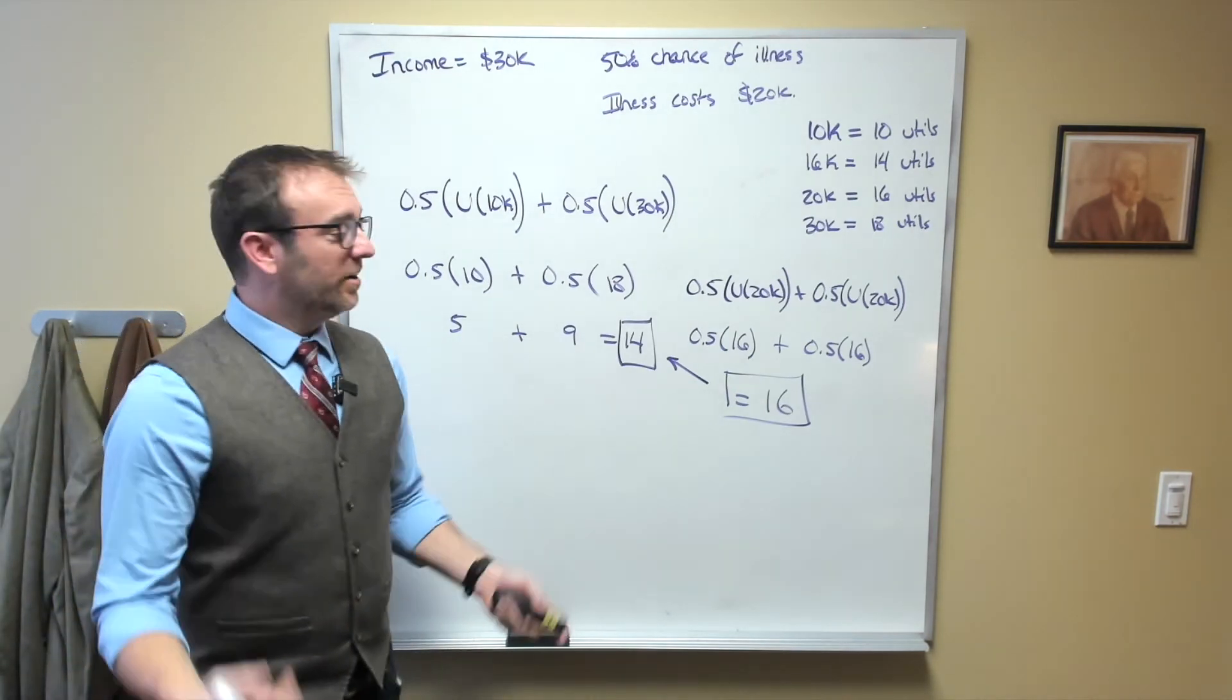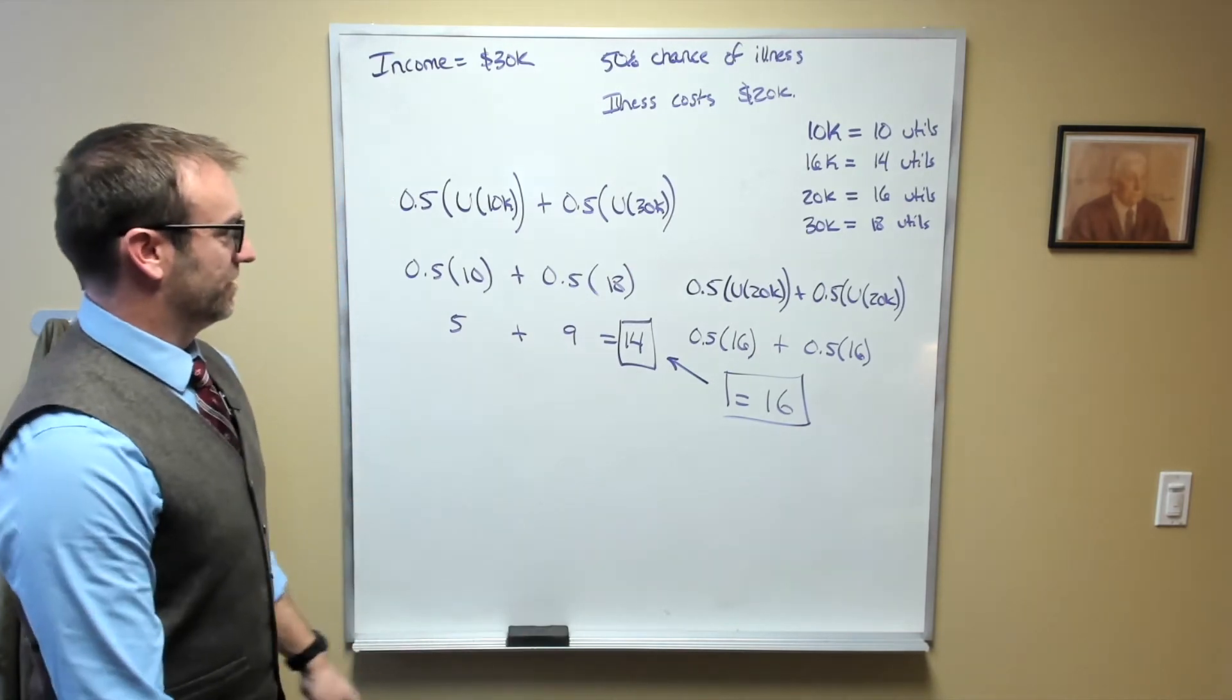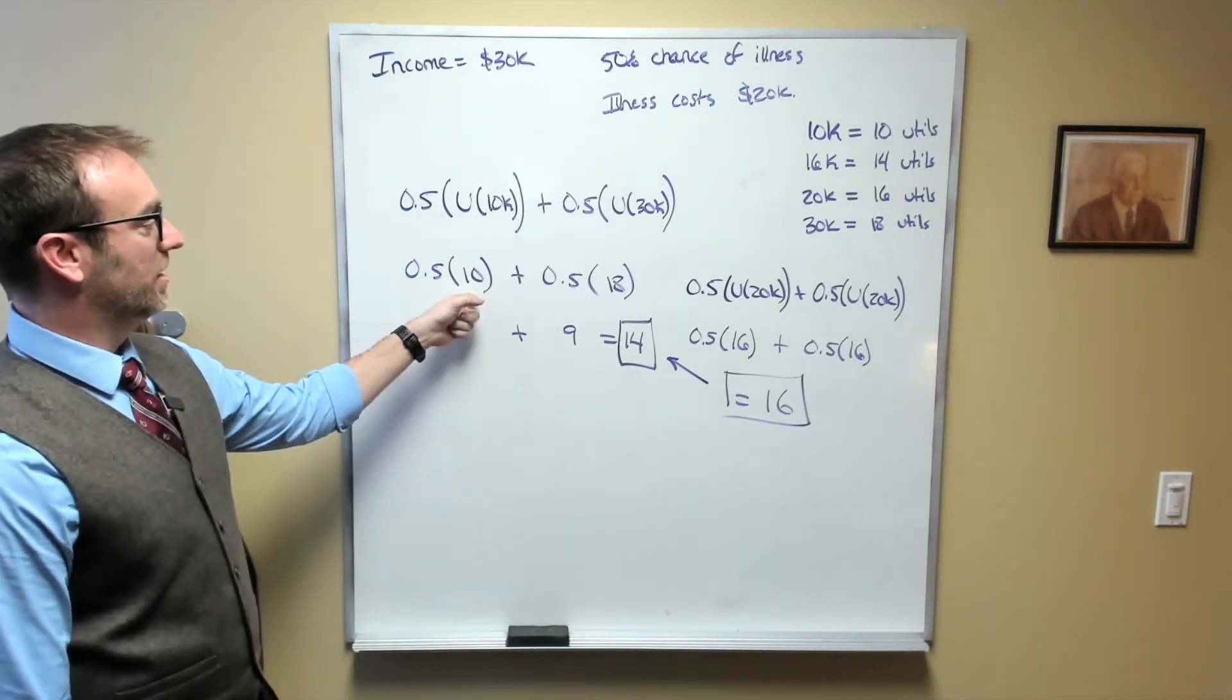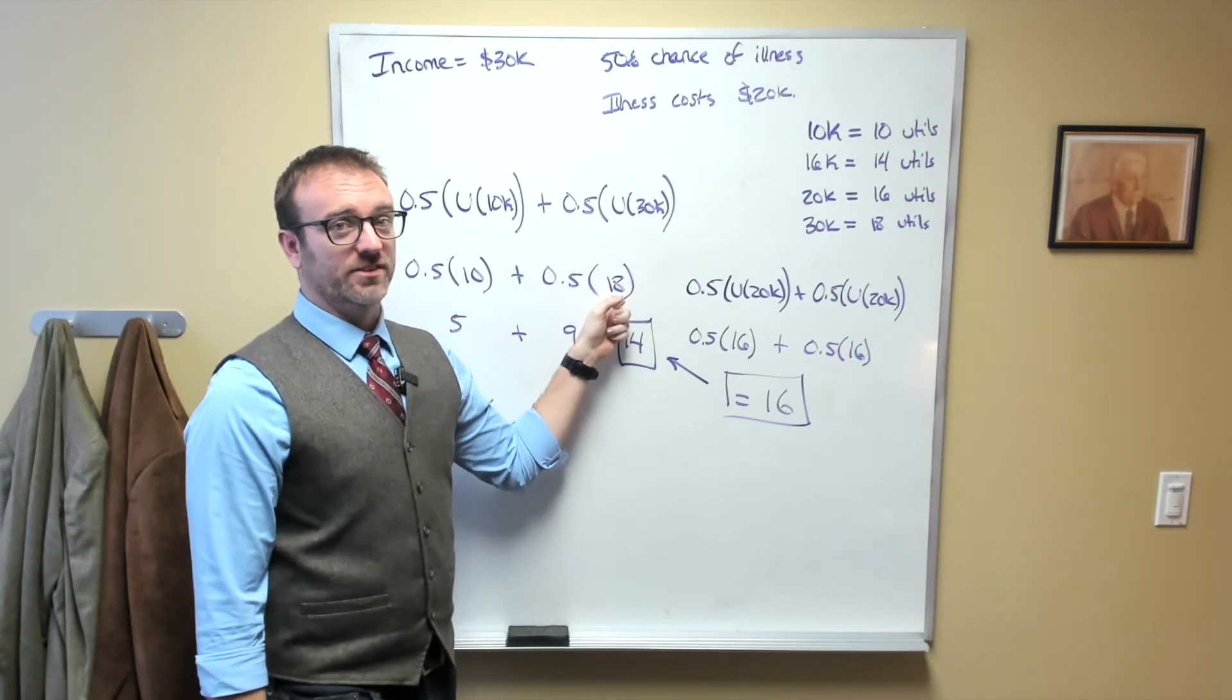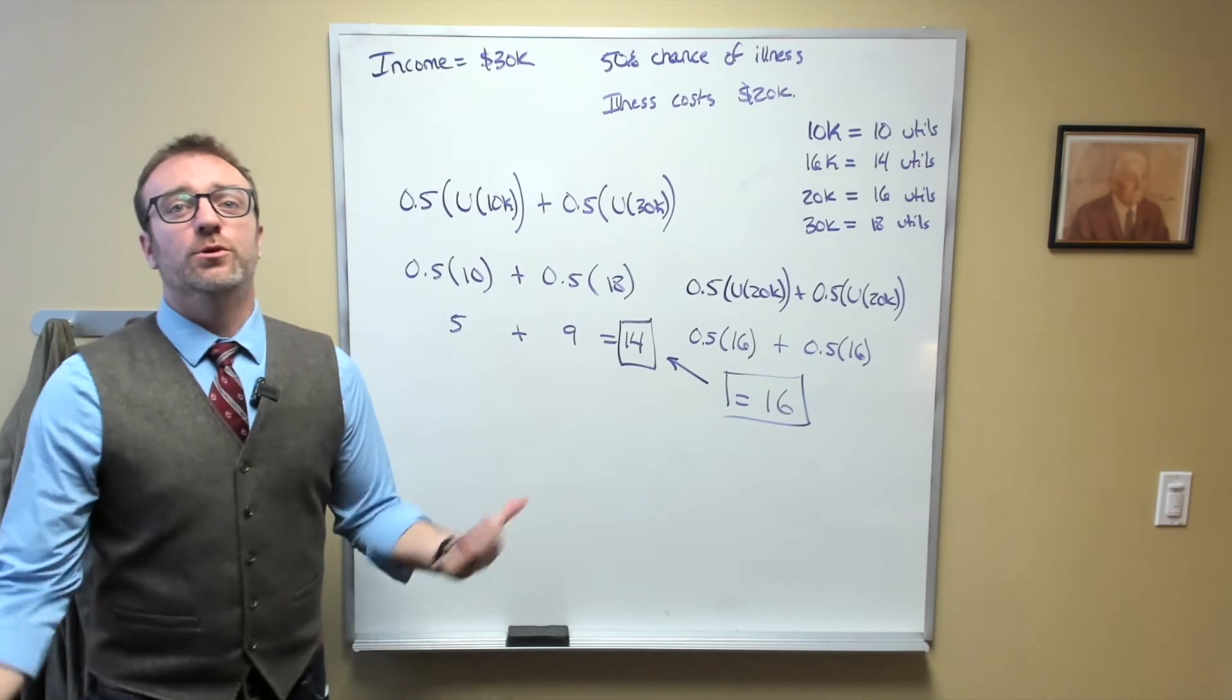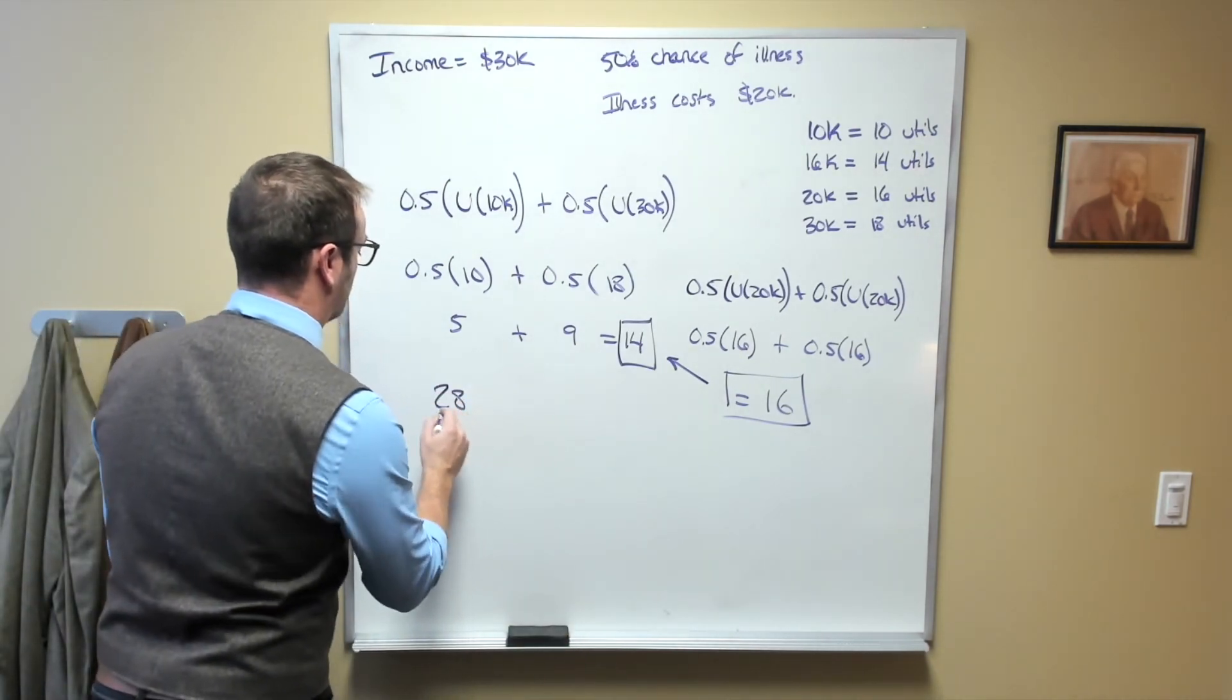Now we can see what would happen here if they didn't buy insurance. In some years, they would have a utility of 10. And in other years, they would have a utility of 18, which means that over a two-year span, they would get a total of 28.